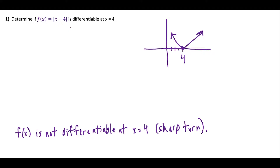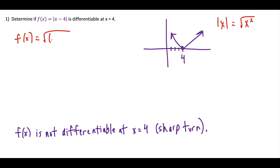But let's say for some reason that graphing this is not an option — the function's too complicated, you're not allowed to use a calculator. An alternate way of looking at this is to use the definition that absolute value of x equals the square root of x squared. This will help you remember how to do the derivative of absolute value of x. So I rewrite this function as the square root of (x minus four) squared, which I could write as (x minus four) squared to the one-half power.